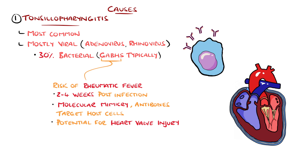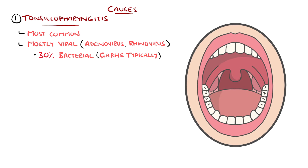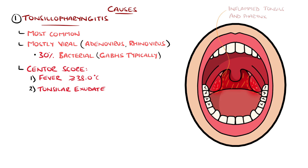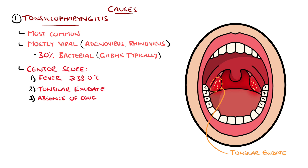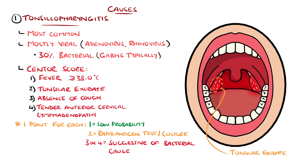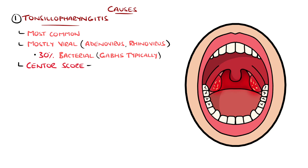The most serious manifestation is rheumatic heart disease, where heart valves are damaged. To help distinguish viral and bacterial causes clinically, scoring systems like the Centor score are used. For each of the following, the likelihood of bacterial infection goes up: fever, tonsillar exudate, absence of cough, and tender anterior cervical lymphadenopathy. A score of one or less indicates low probability, two should be tested via rapid antigen testing and throat culture, and three or four would be warranting of empirical antibiotic treatment, typically phenoxymethylpenicillin or clarithromycin if allergic.